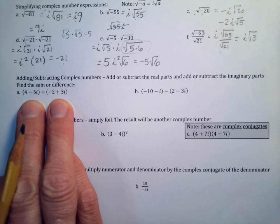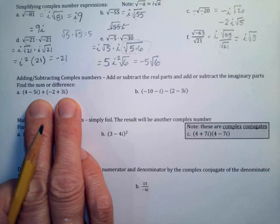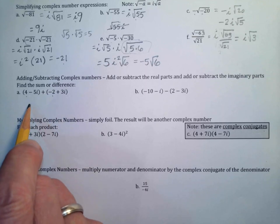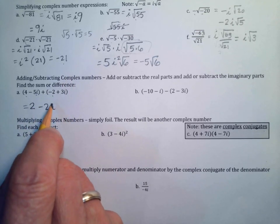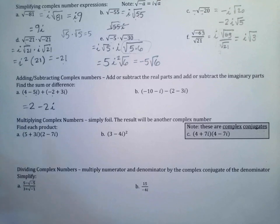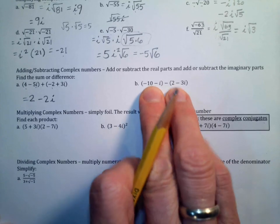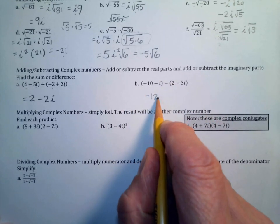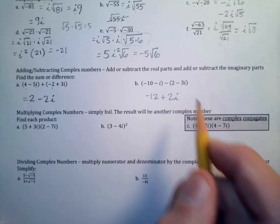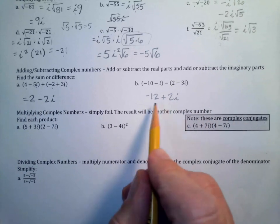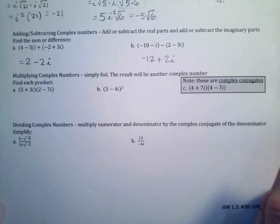Adding and subtracting complex numbers: simply add or subtract the real parts together and the imaginary parts together. For (4 - 5i) + (-2 + 3i): the real parts give 4 - 2 = 2, and the imaginary parts give -5i + 3i = -2i. Result: 2 - 2i. For the next example, the real parts give -12 and the imaginary parts give -i + 3i... actually -i + 2i, giving the answer -12 + 2i.